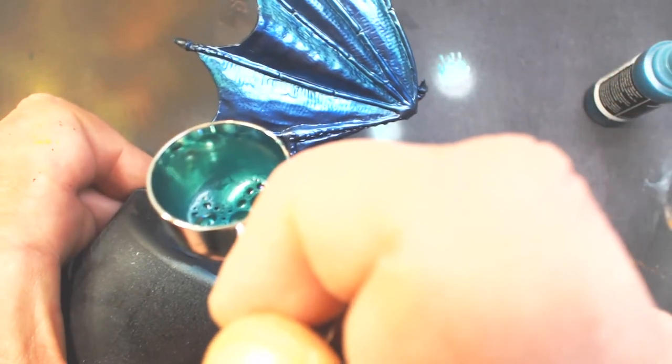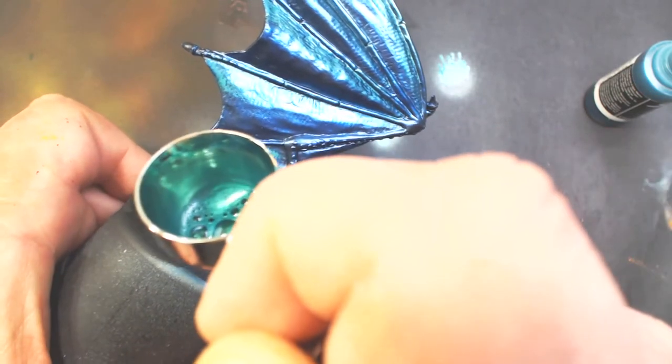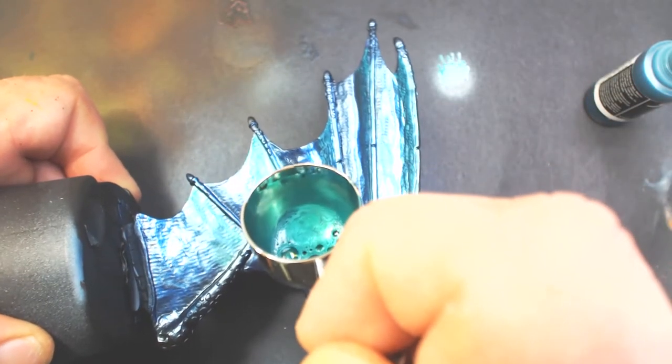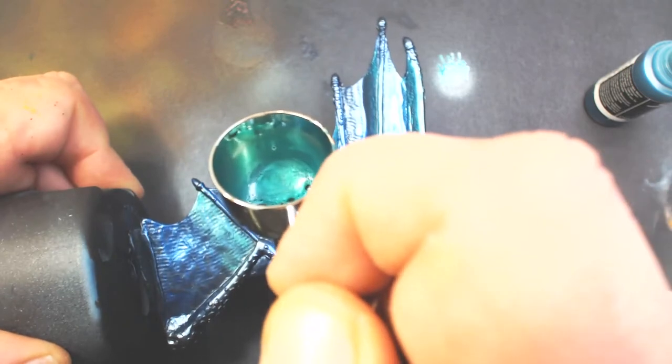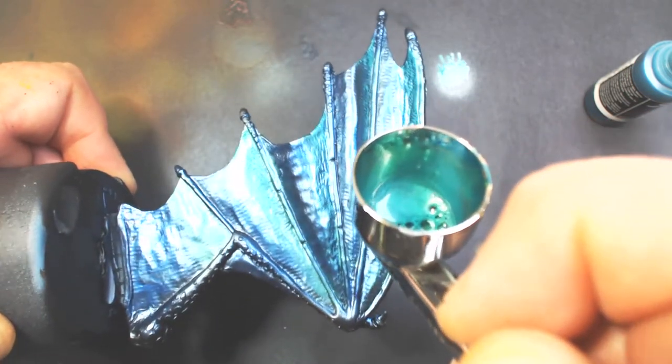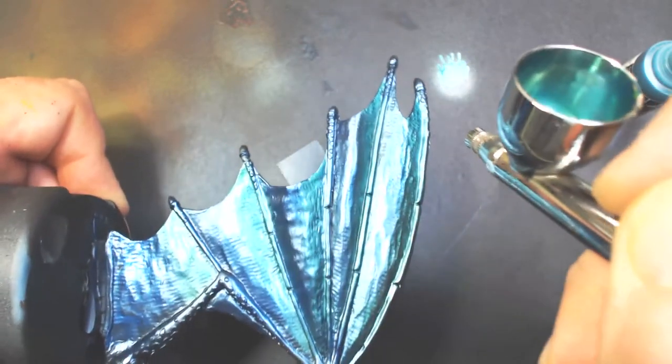So for each section of the wing I'm kind of doing green at the top, blue in the center, and then I will do a purple in the bottom. Just going back, kind of reinforcing those areas, making the green stand out from the blue a little more.